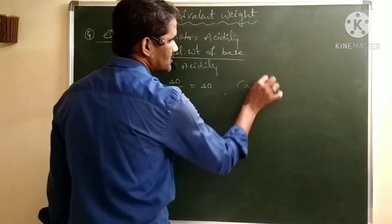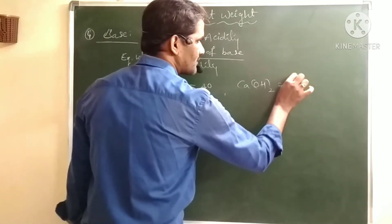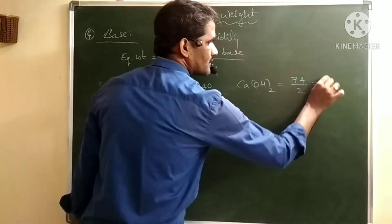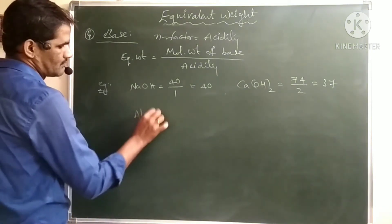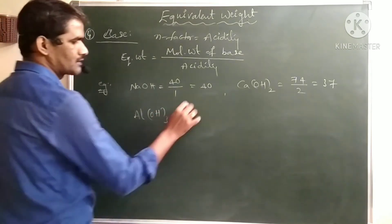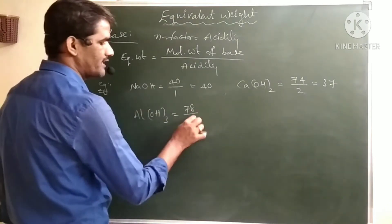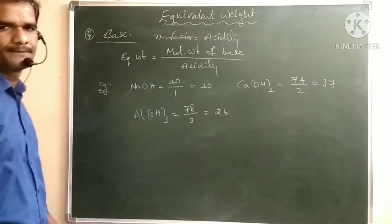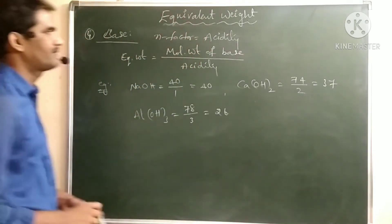For calcium hydroxide, molecular mass is 74 and acidity is 2, so equivalent weight is 37. For aluminum hydroxide, molecular mass is 78 and acidity is 3, so equivalent weight is 26. These are the equivalent weights for bases.